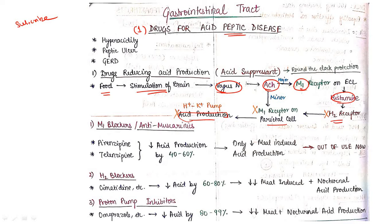First group of drugs is your M1 blocker, M1 receptor blocker, that is also antimuscarinic drug. It includes two drugs: pirenzepine and telenzepine. It causes decreased acid production by 40 to 60 percent. It will decrease acid production by 40 to 60 percent. It only decreases meal-induced acid production but it is out of use now. These two drugs, pirenzepine and telenzepine, act on the M1 receptor and by inhibiting these receptors will decrease acid production by 40 to 60 percent, but they are not in use now.